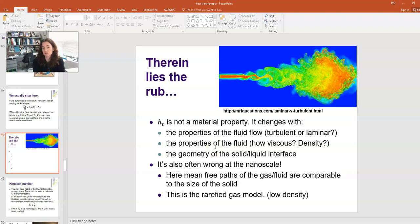The properties of the fluid itself, how viscous it is, how dense it is, the geometry of the solid-liquid interface, that affects h sub t. So, there's a number of properties that can change your value of h sub t.